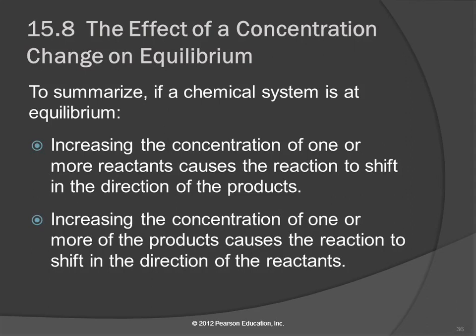So in summary, if you increase the concentration of a reactant, it could be one or more. We were just looking at something simple that had one reactant. But that's going to cause the reaction to shift in the direction that will reduce that, to go in the direction of the products. If we increase the concentration of a product, it will cause the reaction to shift to the reactants. Does anybody have any questions?